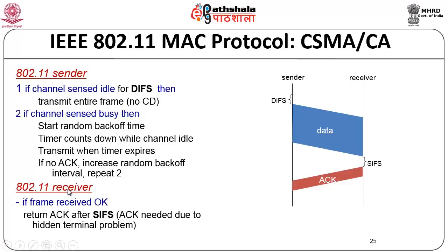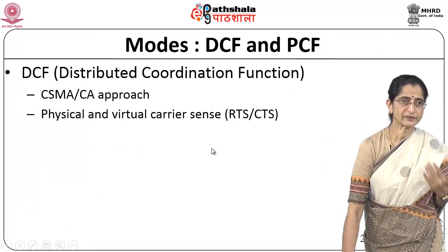The 802.11 receiver, if a frame is received correctly, sends back an acknowledgement after waiting for the SIFS amount of time. We need acknowledgements because there could be hidden terminal problems when not using the RTS/CTS mechanism. We have the CSMA part and the CA part — combining these gives the CSMA/CA mode of operation. 802.11 supports two modes: DCF — distributed coordination function, using CSMA/CA — and PCF — point coordination function.